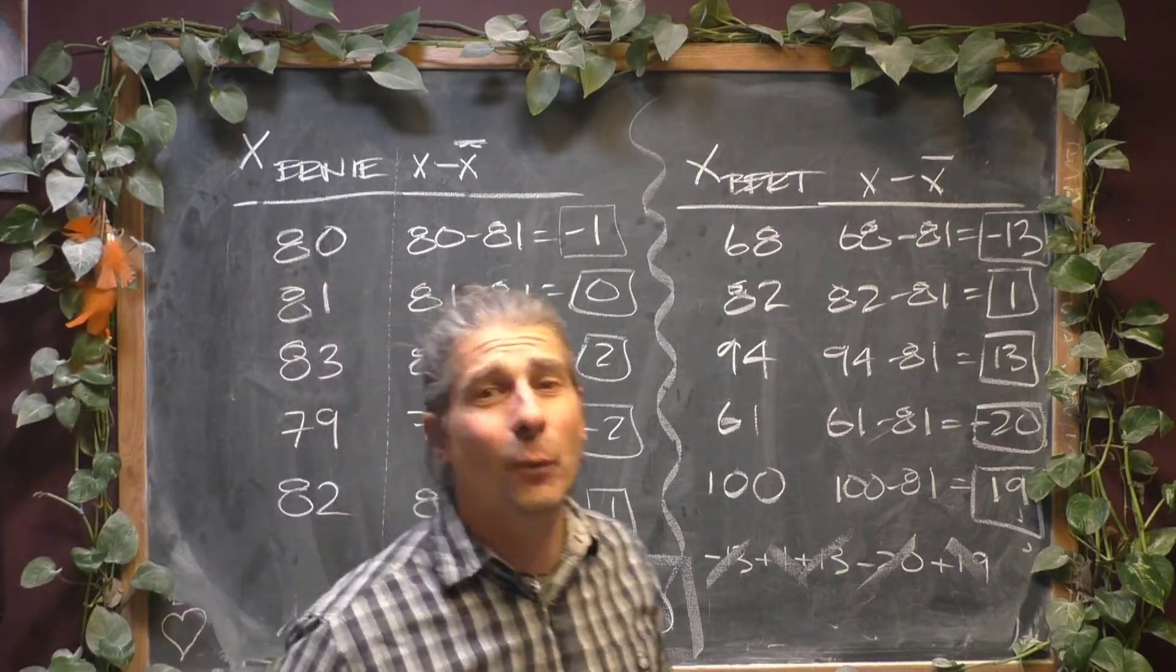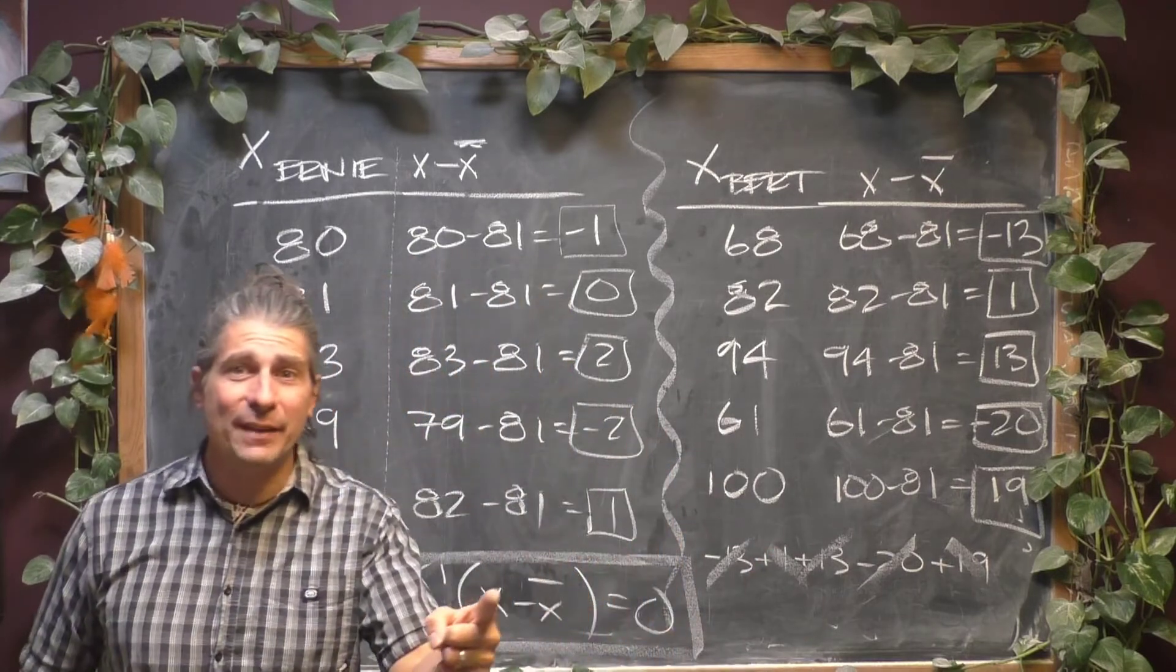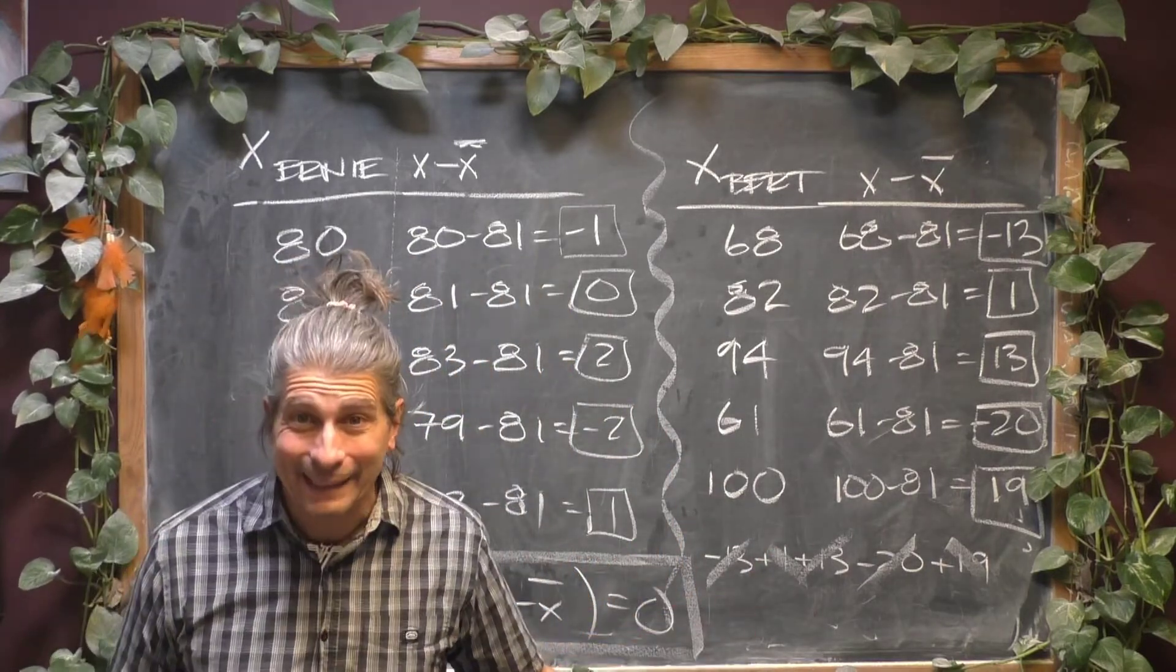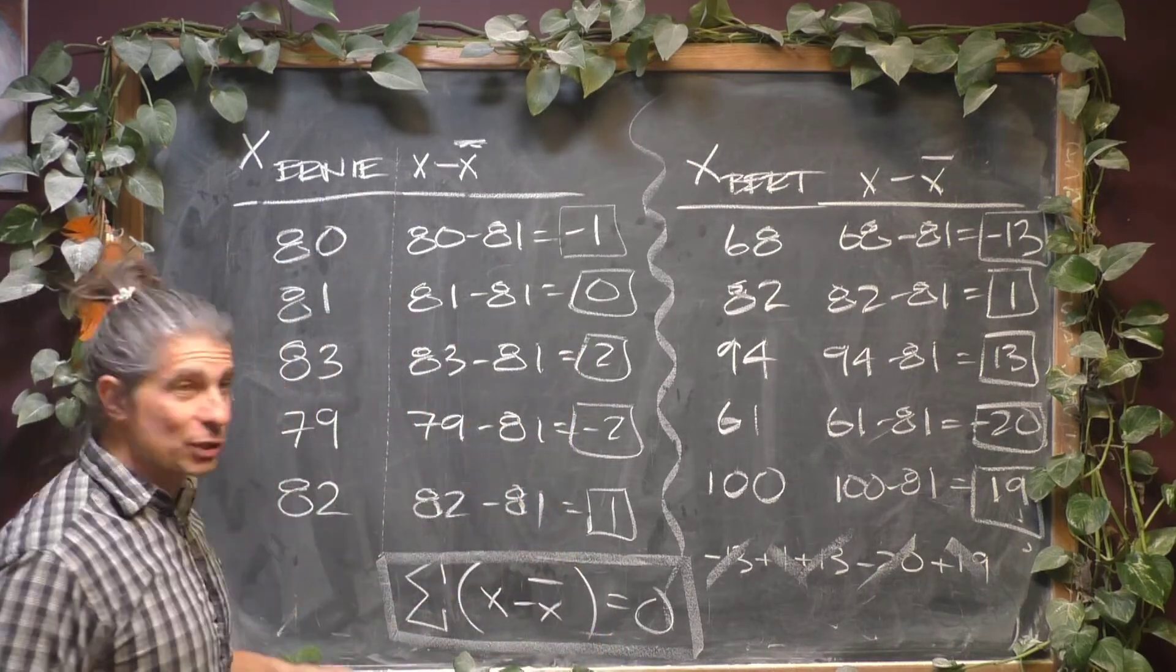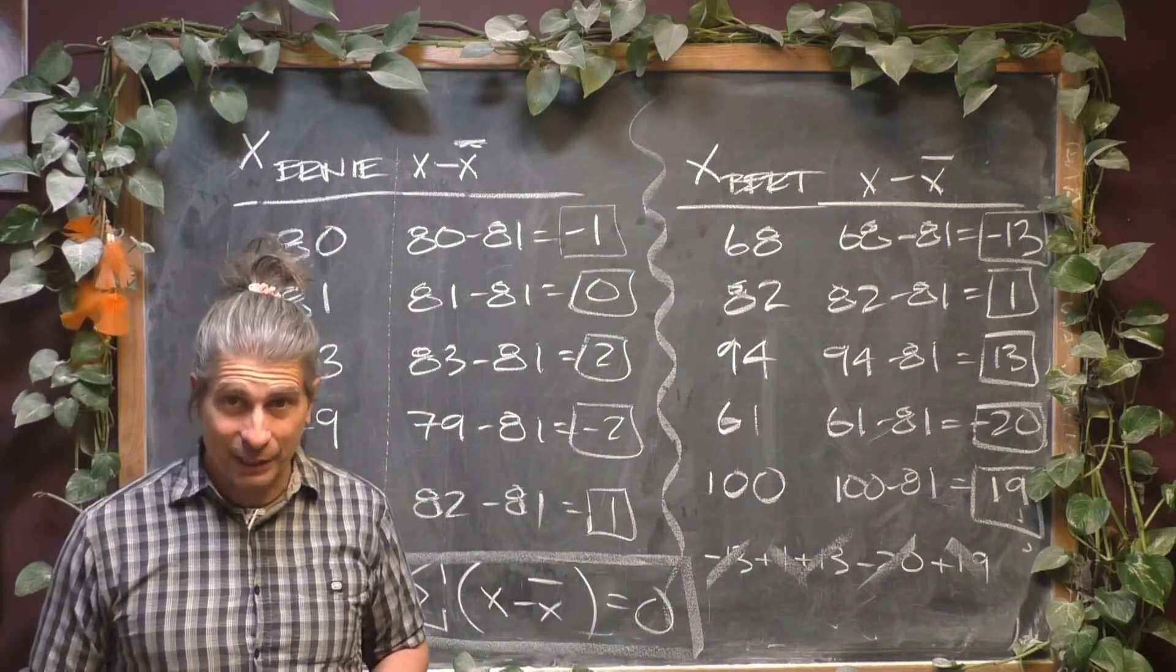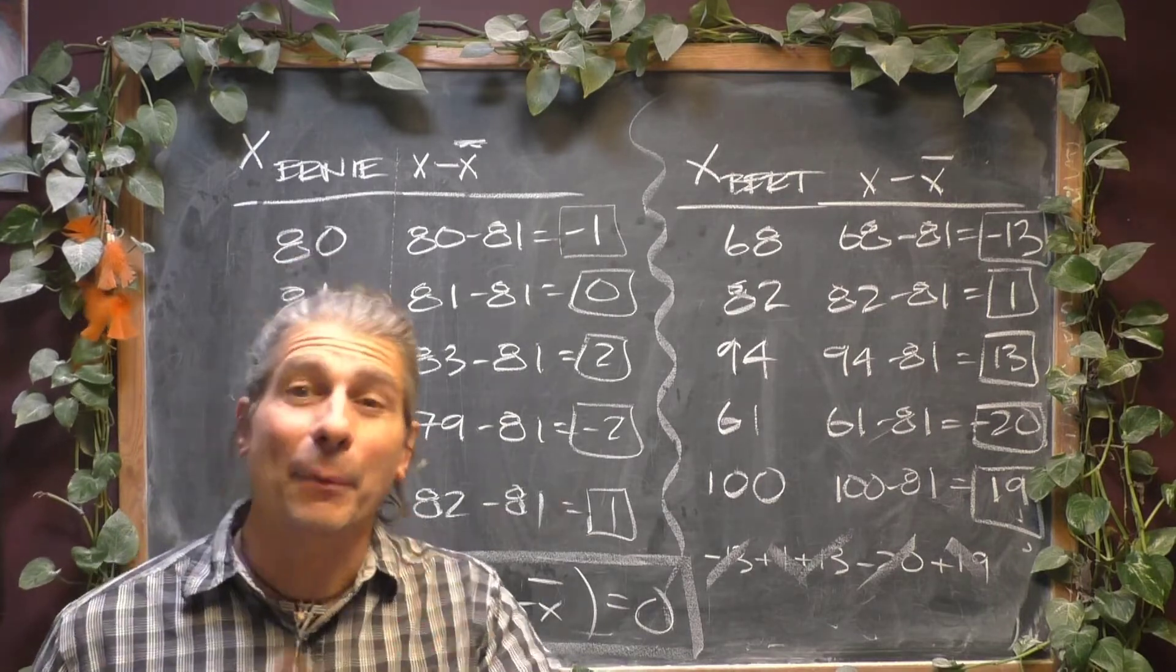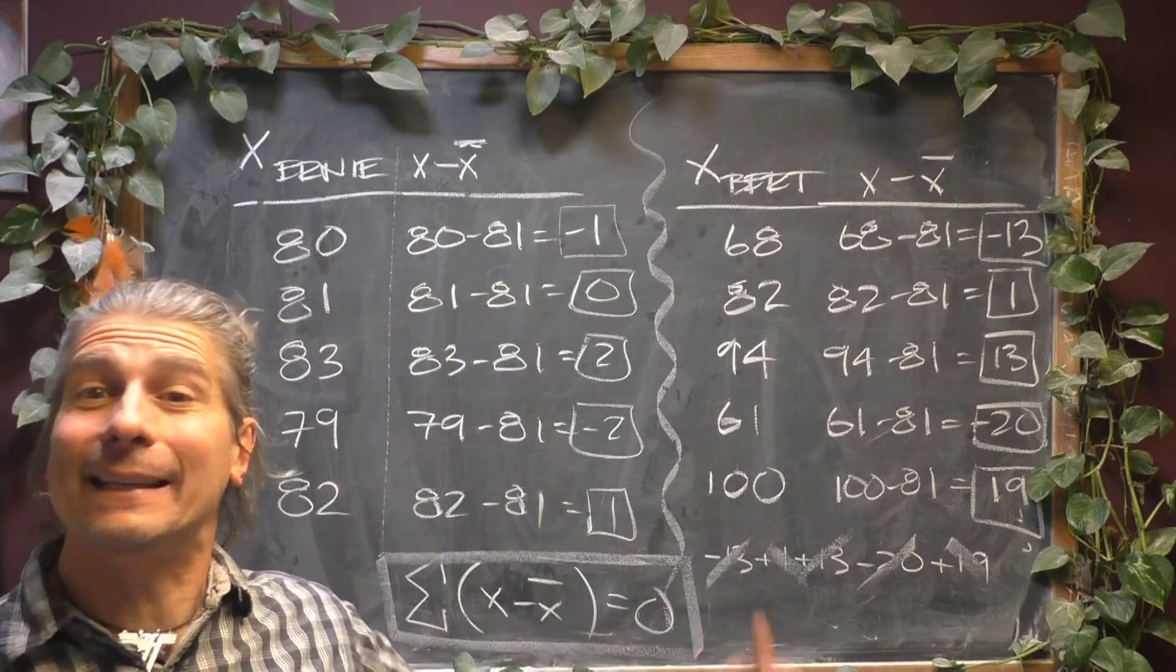And the only way a data set can have 0 deviation is what? Think about that too. What's the only way a set of numbers can have 0 deviation? Scratch down your answer to that. I'm going to ask you about that in the homework. Then we've got to deal with this issue.